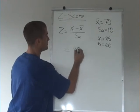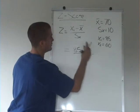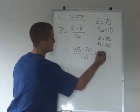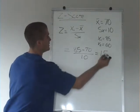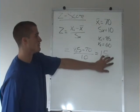So let's take the 85 minus the mean, 70, over 10, standard deviation. 15 over 10 is 1.5, so the z-score for an 85% would be 1.5.